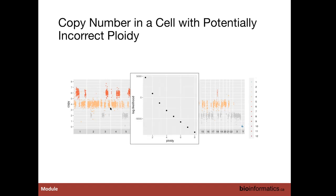This slide shows how well we can fit an HMM model to data using different ploidy solutions. This is the negative log likelihood, so smaller is better. We can see that we could keep increasing the ploidy and keep getting a better fit according to our model. Unfortunately, things like measuring the likelihood of your model in an HMM don't give you any idea of whether you should pick a tetraploid over a diploid solution.